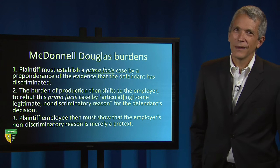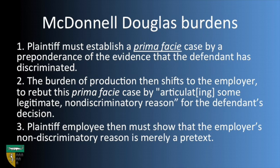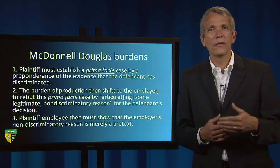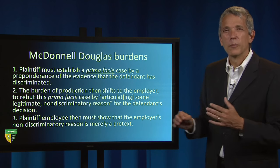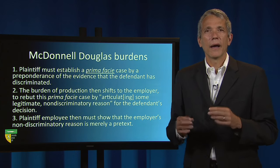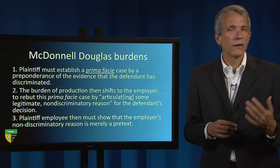To give a more detailed example of how shifting burdens can play out, consider the McDonnell-Douglas standard for establishing disparate treatment discrimination. The framework, as currently applied by courts, is as follows. In the first stage, the plaintiff must first establish a prima facie case by preponderance of the evidence that the defendant discriminated against the plaintiff in some adverse employment decision because of the defendant's race. Then, in the second stage, the burden of production shifts to the employer to rebut this prima facie case by articulating some legitimate non-discriminatory reason for the defendant's decision.